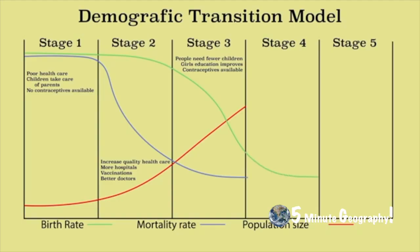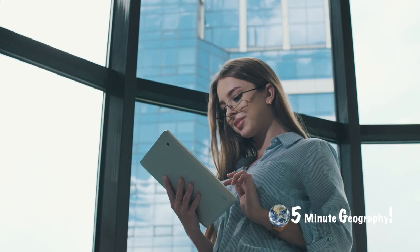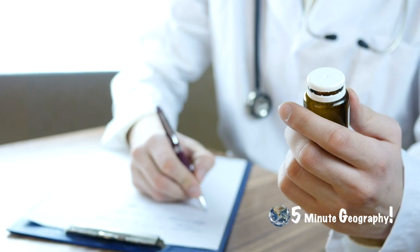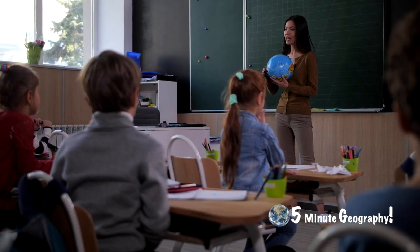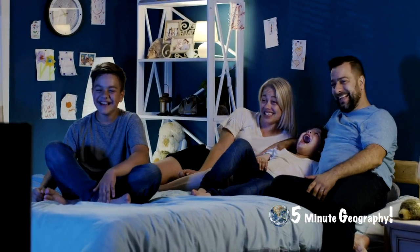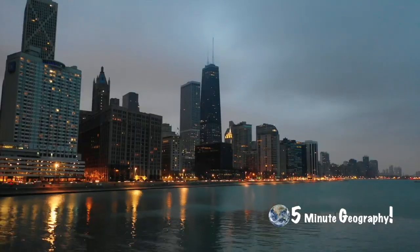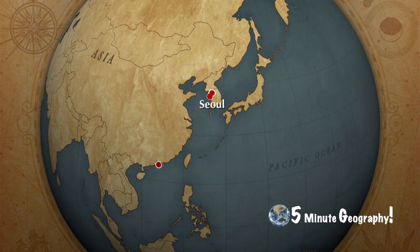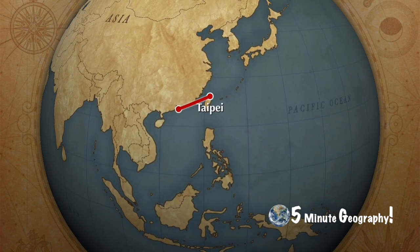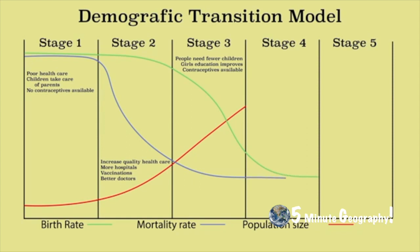In Stage 4, or the low stationary stage, the economy is now well developed with mass education, good healthcare, good services, and women have a high status in society. Couples practise family planning and children are now seen as an economic liability. Mothers have an average of about two children as many also have careers. Birth and death rates are very close and the population grows very slowly. Most European countries, the USA and Canada reached Stage 4 several decades ago, and rapidly developing economies such as South Korea, China and Taiwan are now at Stage 4.